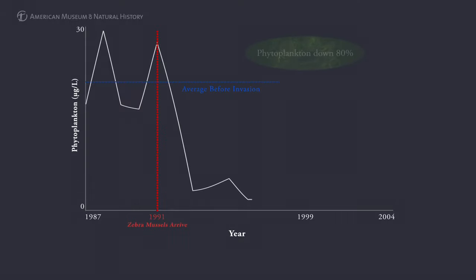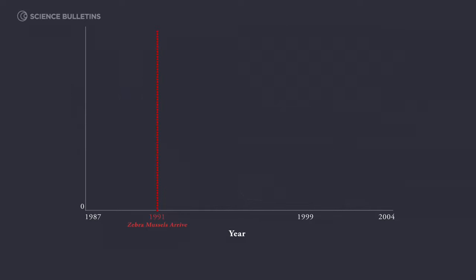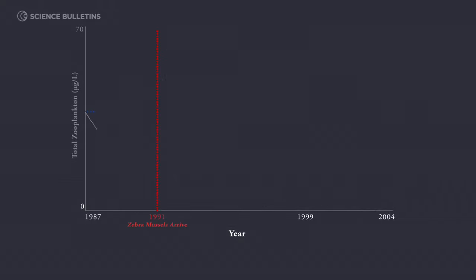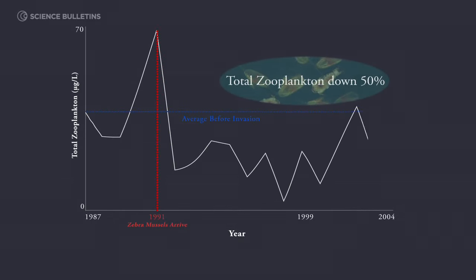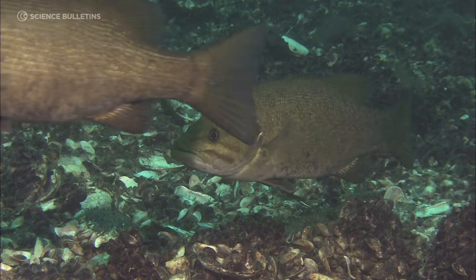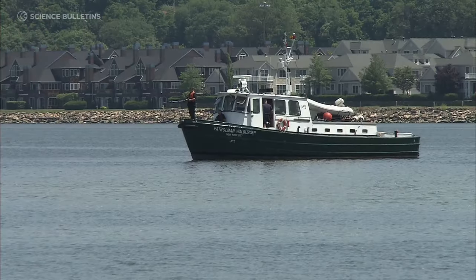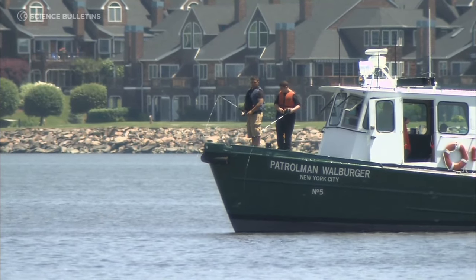We saw about an 80% loss of phytoplankton populations. The smaller zooplankton — the little tiny ones — fell by about 90%, and overall the amount of zooplankton in the river fell by half. That's fish food, so we reckon that about half of the fish food in the river disappeared when zebra mussels came in. The bulk of the Hudson's fish community suffered as a result. People are going to be upset that they're not finding their fish — when something disappears, you should worry about what's going on with your ecosystem.